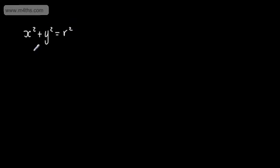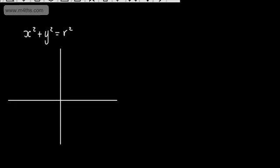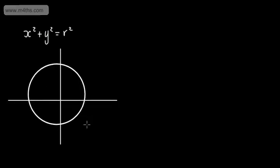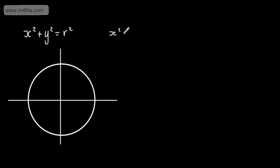We can write that in the form x squared plus y squared is equal to r squared, where r is the radius. I'm going to draw a quick sketch with our coordinate axes, and put on a circle. The equation is going to be x squared plus y squared is equal to 4. This is the radius squared, so the radius is equal to 2.